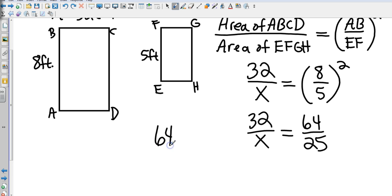So that gives me 64X. And then I'm going to multiply 32 times 25. 32 times 25, that's going to give me 800. Then I divide both sides by 64, and that gives me an area of,